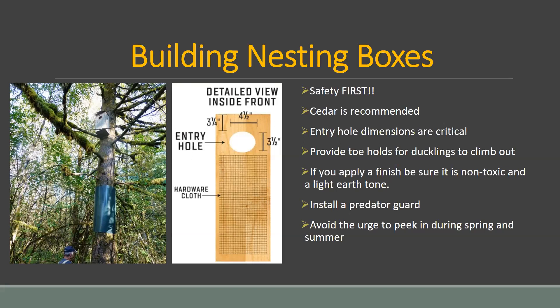The entry hole is one of the most critical things — it should be about three and a half inches high and four and a half inches wide, allowing ducks in while keeping out larger predators like raccoons. You can apply a finish, but make sure it's non-toxic and an earth tone — don't paint it super bright or black, as black gets very hot in the sun. You can fill the box with wood shavings and clean it out each year in winter. Hang the box at least 10 feet off the ground. After the ducks have fledged, you can cover the hole to prevent European starlings or yellow jackets from taking over.